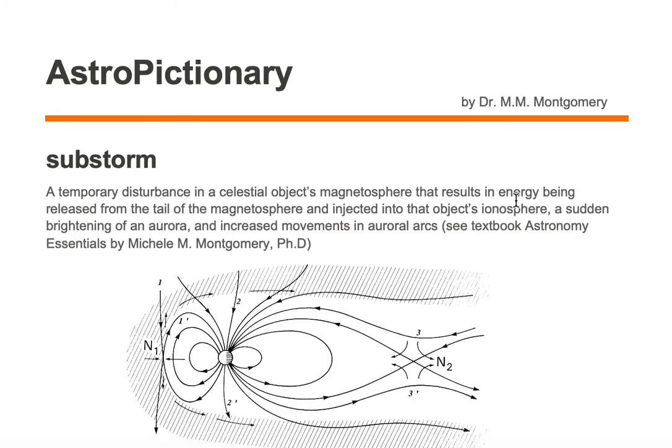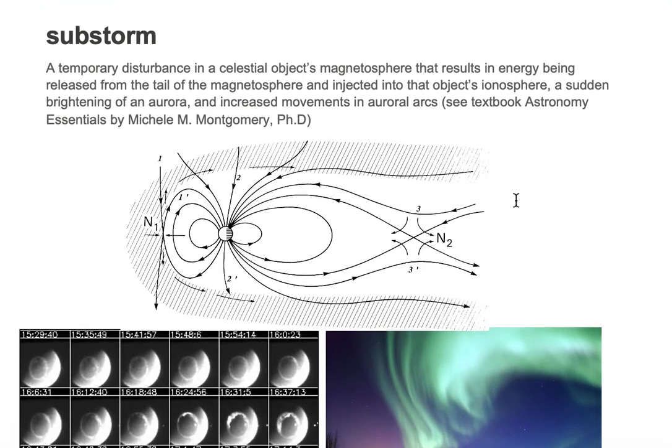Let's take a look at what happens in a substorm. Here we have planet Earth in the center with Earth's magnetic field lines drawn in a dipole. The magnetosphere is outlined in red, and we have energy being released from the tail of the magnetosphere.